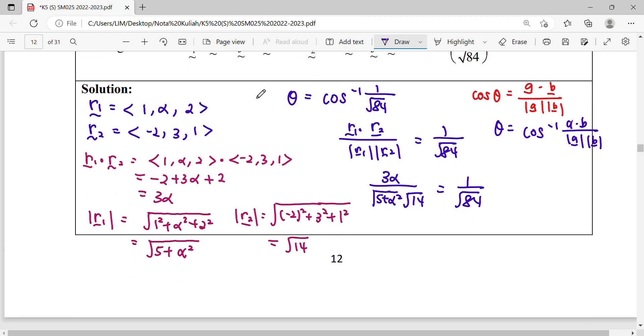Simplify this, we cross multiply, then you can square both sides to get rid of this square root. So when you cross multiply, it will be 3 square root 84 alpha. For that side, it will be square root 5 plus alpha square times square root 14. Then you square both sides to get rid of the square root.